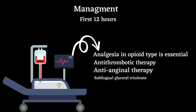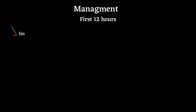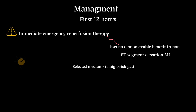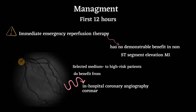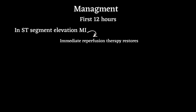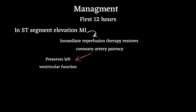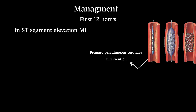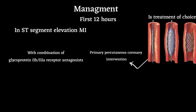Antianginal therapy includes sublingual glyceryl trinitrate. Immediate emergency reperfusion therapy has no demonstrable benefit in patients with non-ST segment elevation MI; selected medium-to-high-risk patients benefit from in-hospital coronary angiography and revascularization, but this does not need to occur within the first 12 hours. In ST segment elevation MI, immediate reperfusion therapy restores coronary artery patency, preserves left ventricular function, and improves survival. Primary percutaneous coronary intervention (PCI) is the treatment of choice, with best outcomes when combined with glycoprotein 2b3a receptor antagonists.